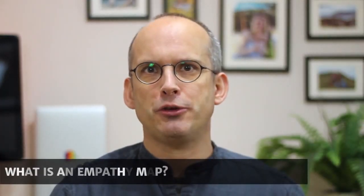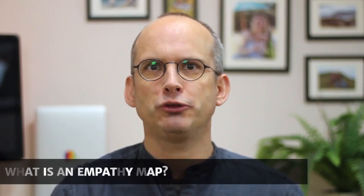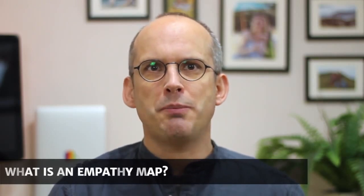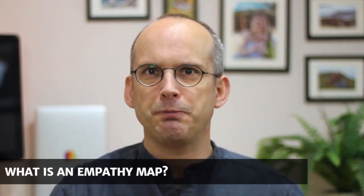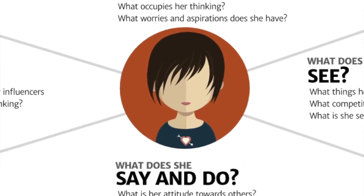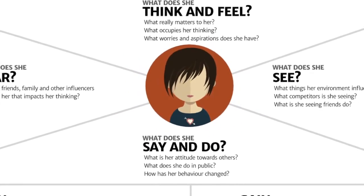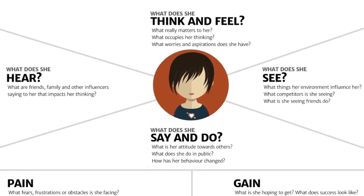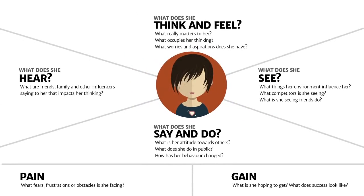An empathy map is a collaborative tool that teams can use to better understand their customers, and it consists of an image of the customer surrounded by six sections normally. These six sections do vary slightly, but generally they are: think and feel — what matters to the user, what occupies their thinking, and what worries and aspirations do they have?